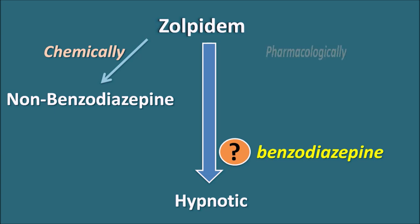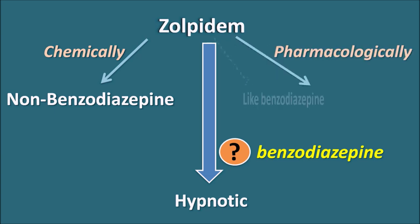Pharmacologically, Zolpidem acts like the benzodiazepines — not completely, but its target is similar to the benzodiazepines. So Zolpidem is a non-benzodiazepine, meaning it is chemically not a benzodiazepine but still acts pharmacologically like one.